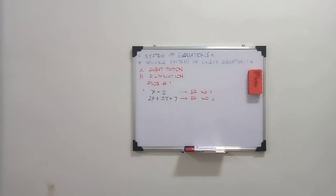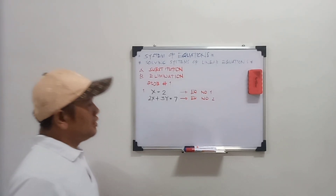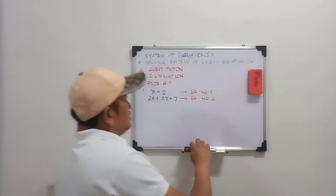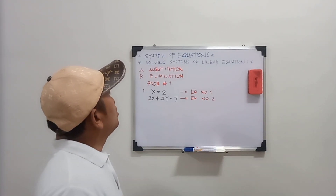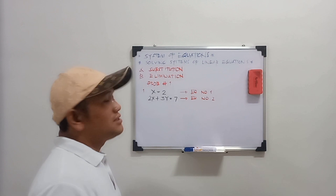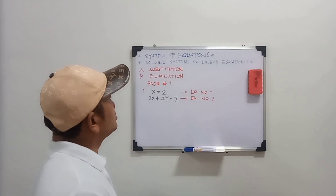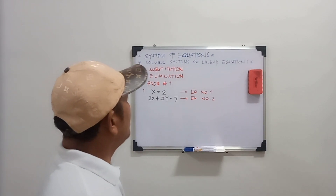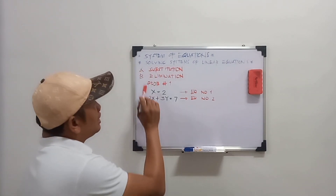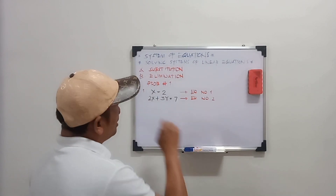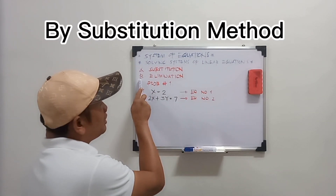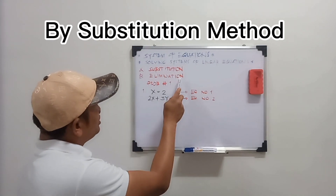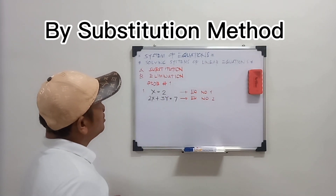Okay guys, so system of equations — solving systems of linear equations. Using letter A by substitution, and letter B by elimination.